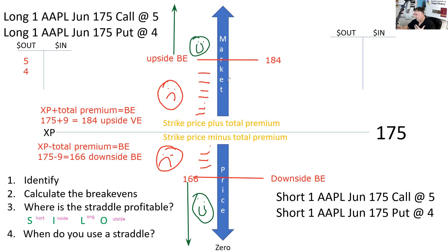We have two versions of straddles — long straddles and short straddles. Down here in the bottom right, I have a short straddle. I have an obligation to sell 100 shares of Apple at 175, and an obligation to buy 100 shares of Apple at 175. The identification is long two different types of contracts, or short two different types of contracts.